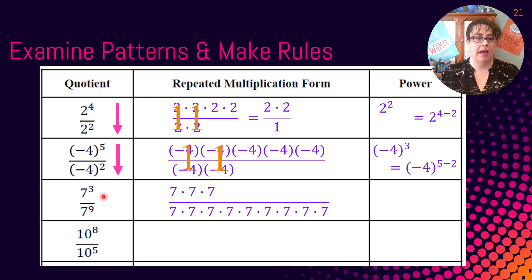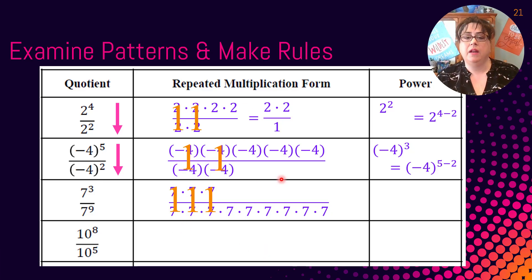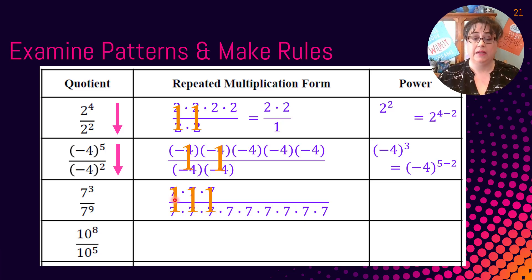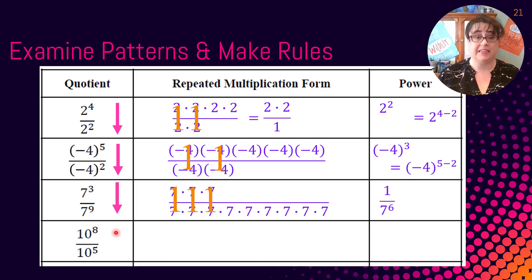This time I have three sevens in the numerator and nine sevens in the denominator. Seven over seven equals one, so those reduce. I'm left with nothing on top — but it's not really nothing. It's one times one times one; each reduced pair equals one. On the bottom I have six sevens remaining, so I have one over seven to the sixth. Nine minus three is six, which confirms our pattern.